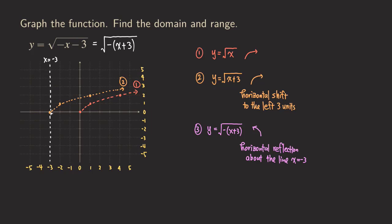This point is on the line of reflection, so we don't do anything to it — it stays at the same point. The next point is one unit away from the line, so on the other side we mirror it to the other side. Same thing for the third point, but we don't have enough space to draw it. So now we have the final graph, and the domain and range are the same as before — you can see it's the same graph as the one we had before.